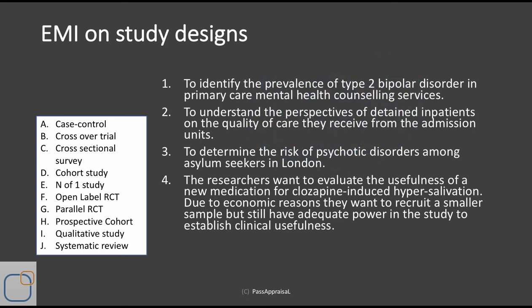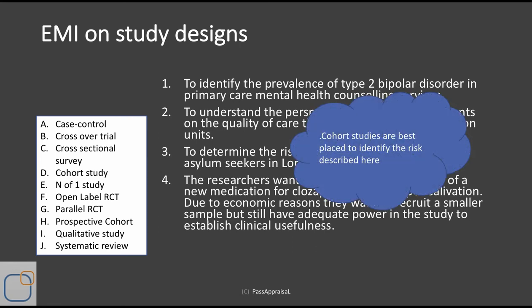Question 3: To determine the risk of psychotic disorders among asylum seekers in London. Risk is nothing but incidence — the chance that an event is going to happen at some point in the future. Because you are incorporating the future in defining risk, risk can only be measured if the design has a temporal sequence; it should be a prospective design. A cohort study is therefore the best design here. You can assemble a cohort of asylum seekers, study them over a period of time, and measure how many develop psychosis to estimate the risk.